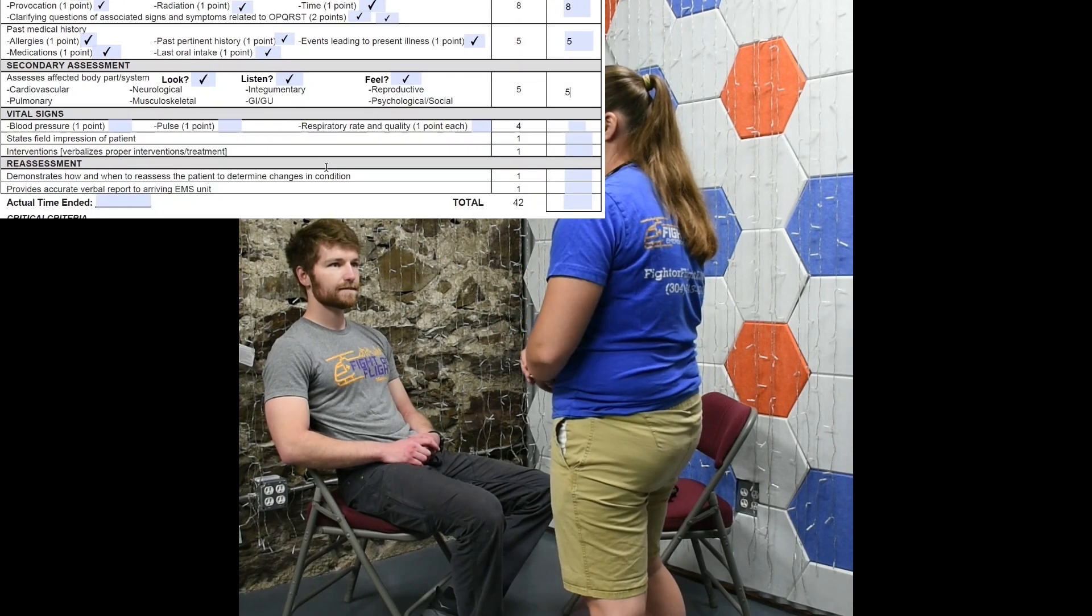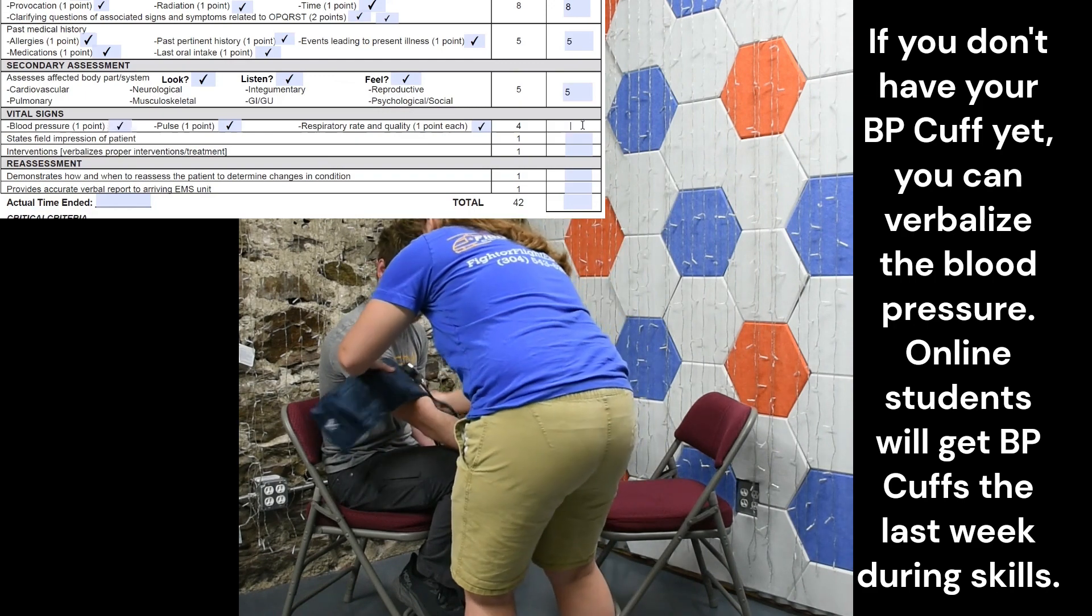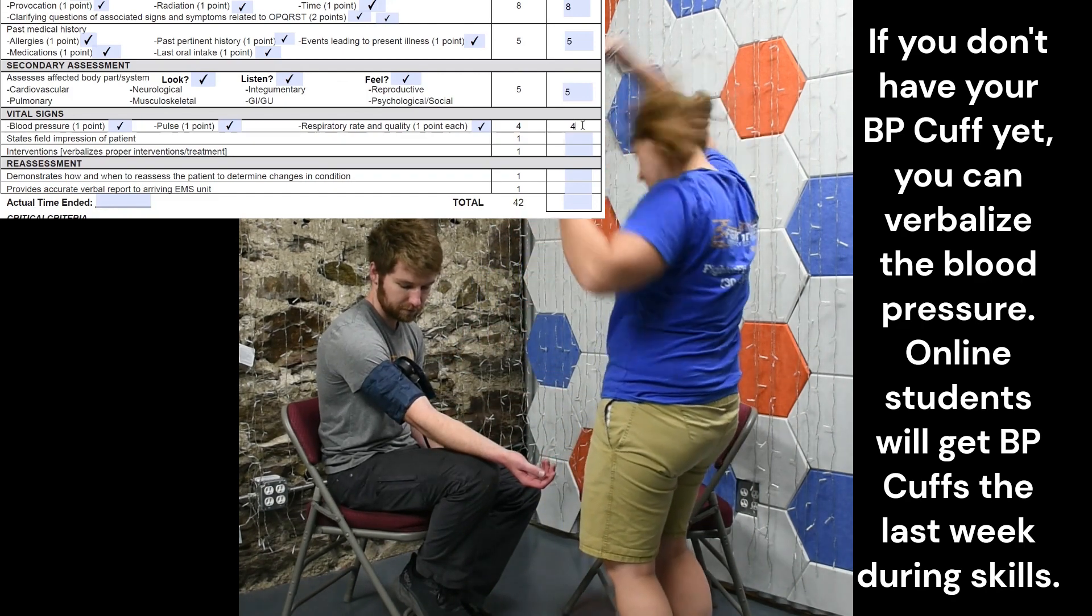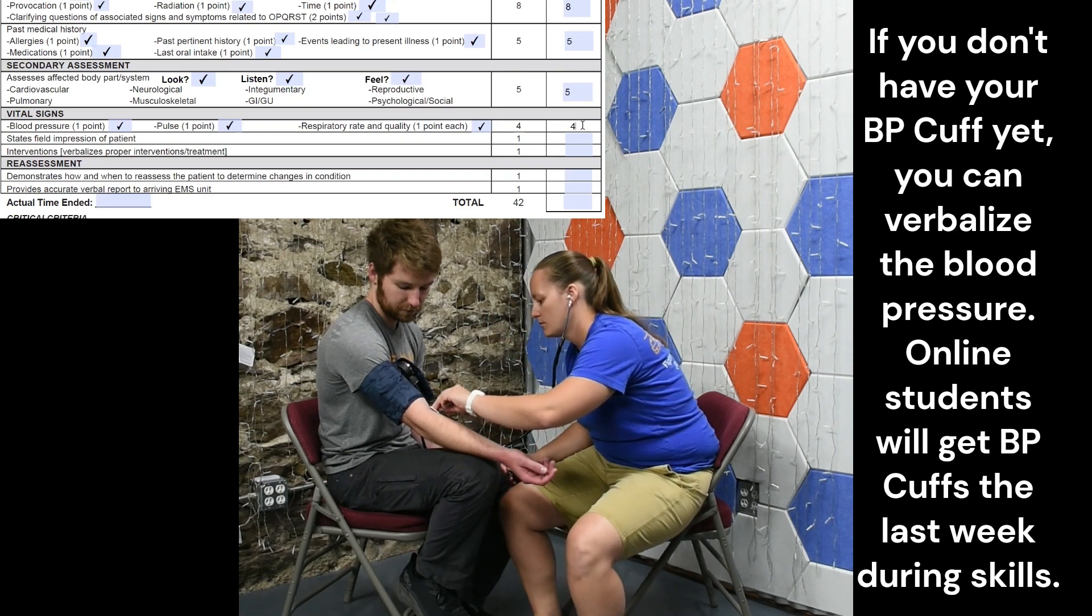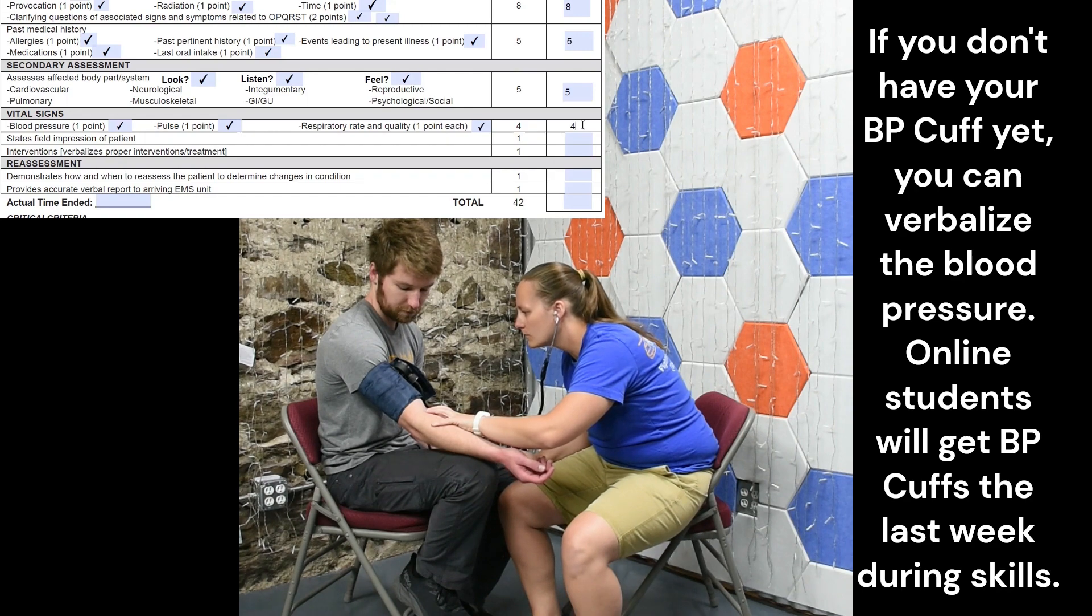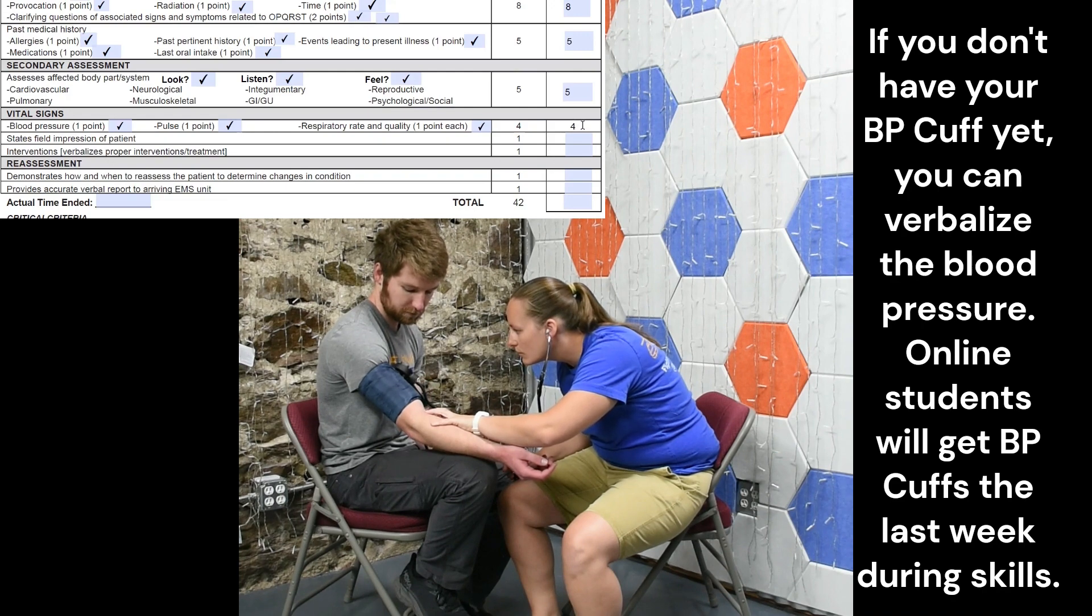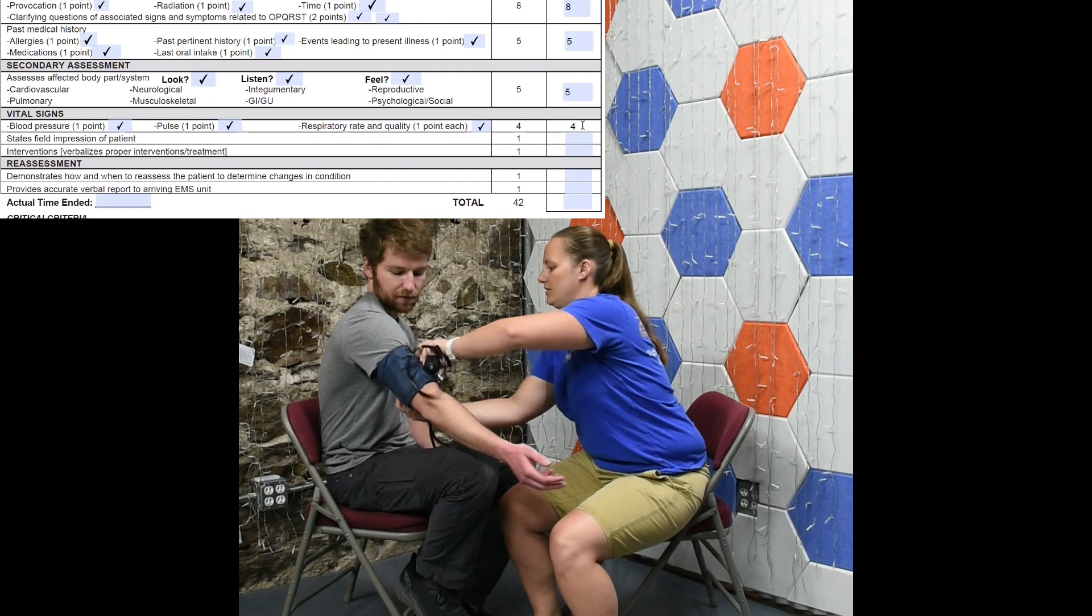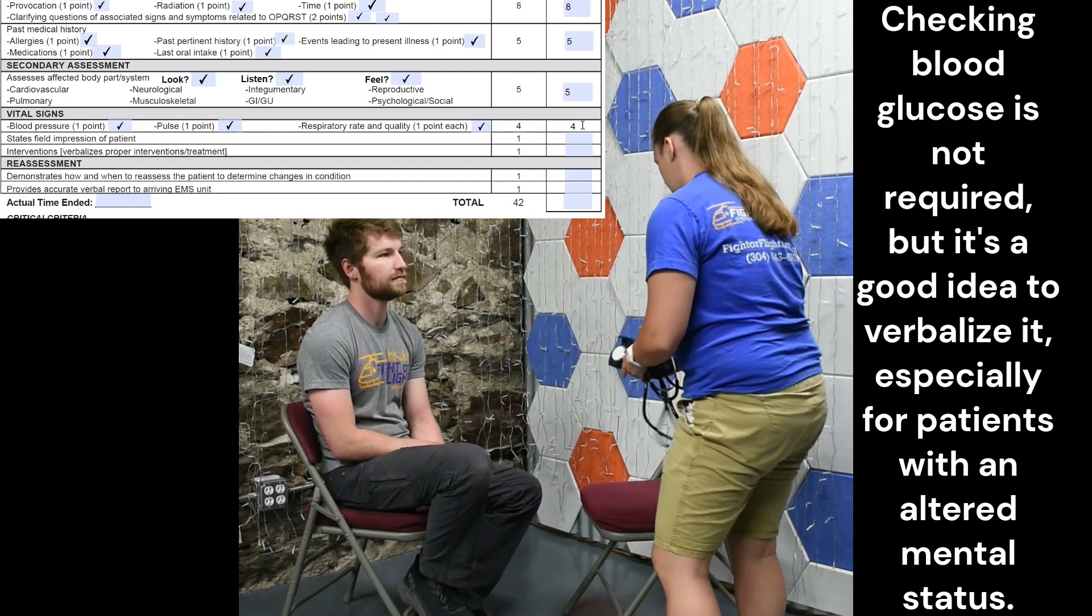I'm going to get a full set of vitals. So I already got your pulse and respiratory rate. I'm going to check your blood pressure. Got about 140 over 82. What is my patient's blood pressure? Your patient's blood pressure is 165 over 110. And I don't see you need to check a blood glucose level. So I'm going to skip that.